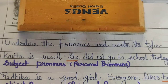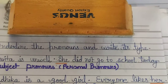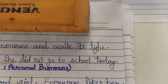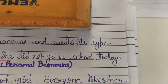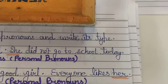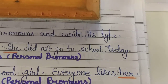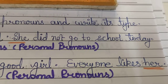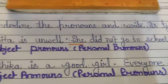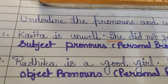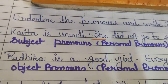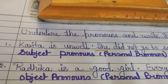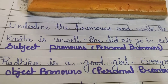Now move to the second sentence: Radhika is a good girl. Everyone likes her. Radhika is the subject in the first sentence. In the second sentence, Radhika is replaced by 'her', but she is not the subject — 'everyone' is the subject. When the pronoun receives the action done by the subject, it is called an object pronoun. So we have written here 'object pronoun'. You should know what is subject pronoun and what is object pronoun.